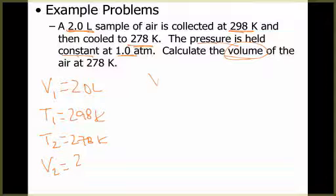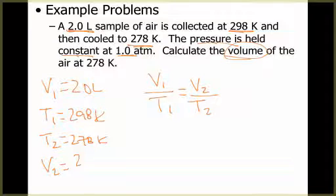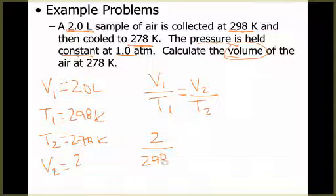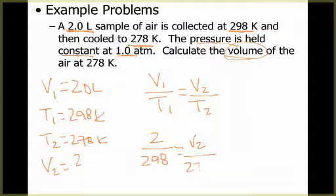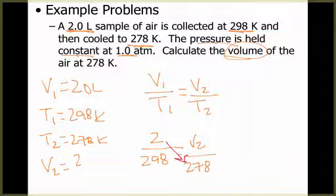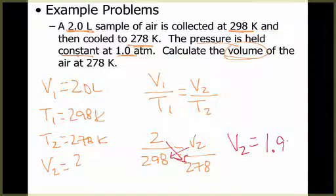We set this up as V1/T1 = V2/T2. Substituting in: V1 = 2, T1 = 298 — since this is already in Kelvin, we don't need to convert. V2 is what I'm solving for, and T2 = 278, also in Kelvin. We cross-multiply and divide to solve for V2. V2 ends up being 1.9 liters — not a big difference, but a little bit of a difference between those two temperatures.